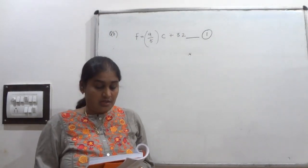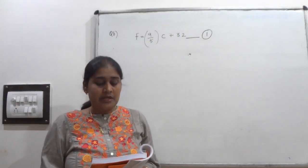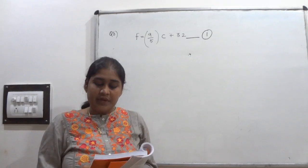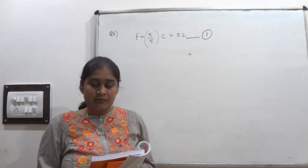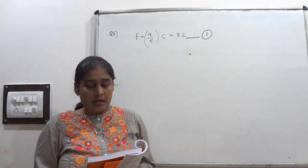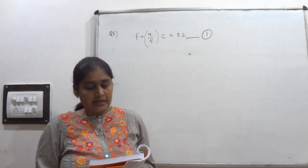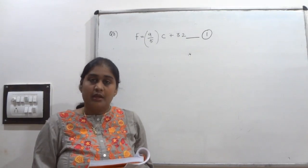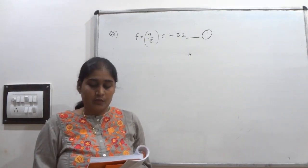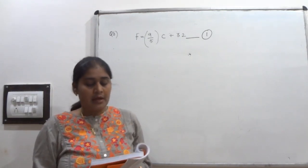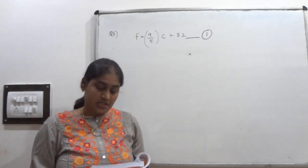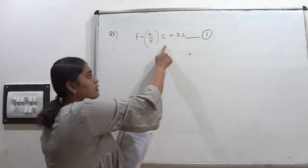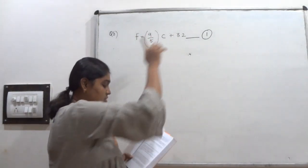Question number 8. In countries like USA and Canada, temperature is measured in Fahrenheit, whereas in countries like India, it is measured in Celsius. Here is a linear equation that converts Fahrenheit to Celsius: F is equal to 9 upon 5 into C plus 32.